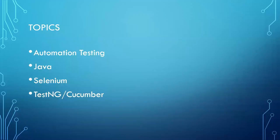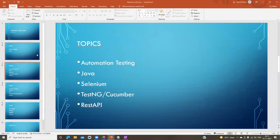Next we will see a framework in automation — TestNG and Cucumber. After the frameworks we will see REST API. Let me explain what I'm going to cover in TestNG.